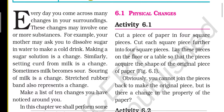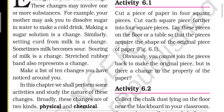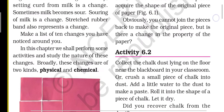Activity 1 - Physical change: Cut a piece of paper into four square pieces, then cut each square piece further into four square pieces. Lay these pieces on the floor or table so that the pieces acquire the shape of the original piece. Obviously you cannot join the pieces back to make the original piece. There is a change in the property of the paper - a physical change has occurred.